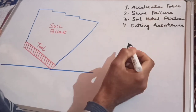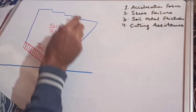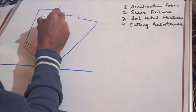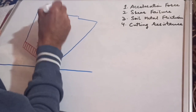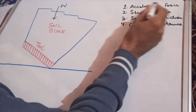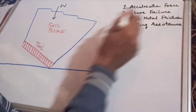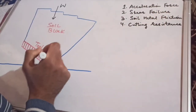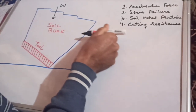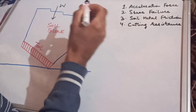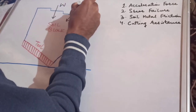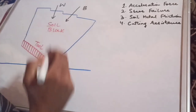There are four parameters involved. First, this soil block has a certain weight, denoted by W, acting in the outward direction. Then there is an acceleration force, denoted by B, which acts at some angle because the soil particle strikes at some angle when it hits the tool surface.